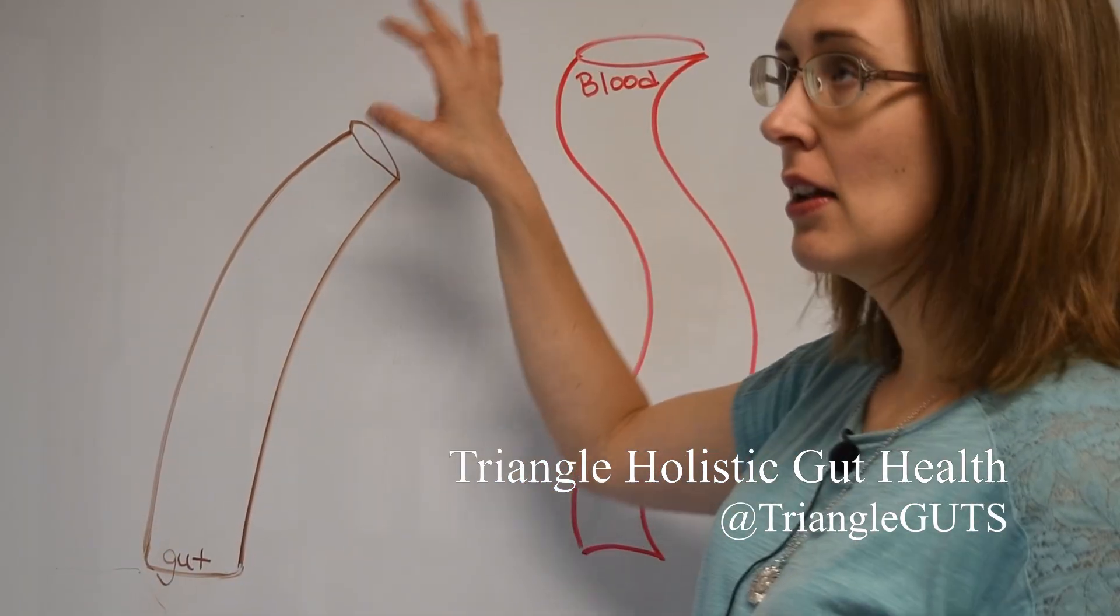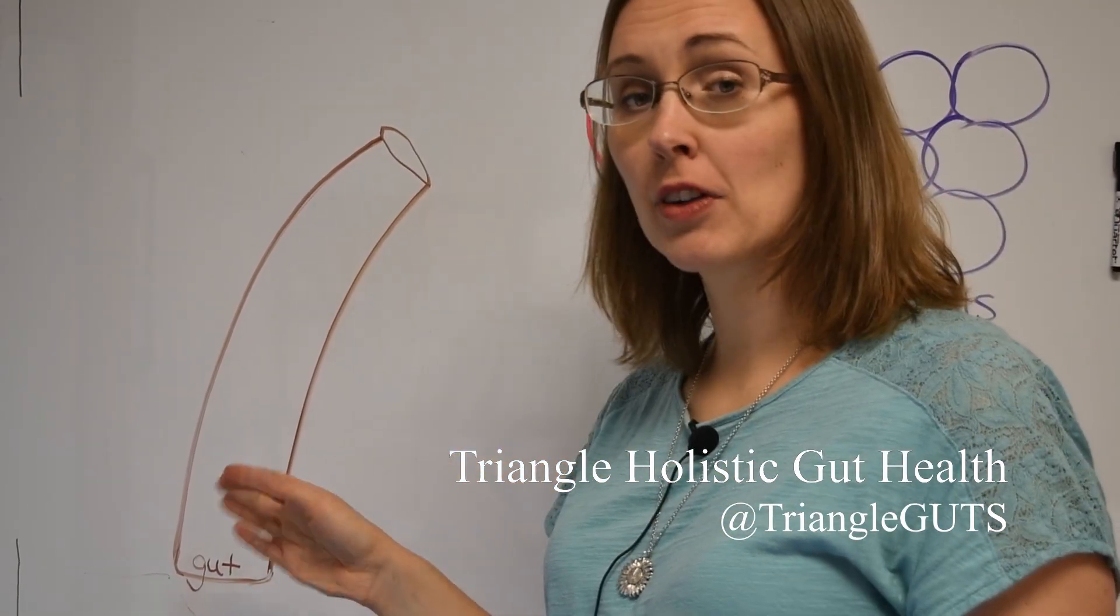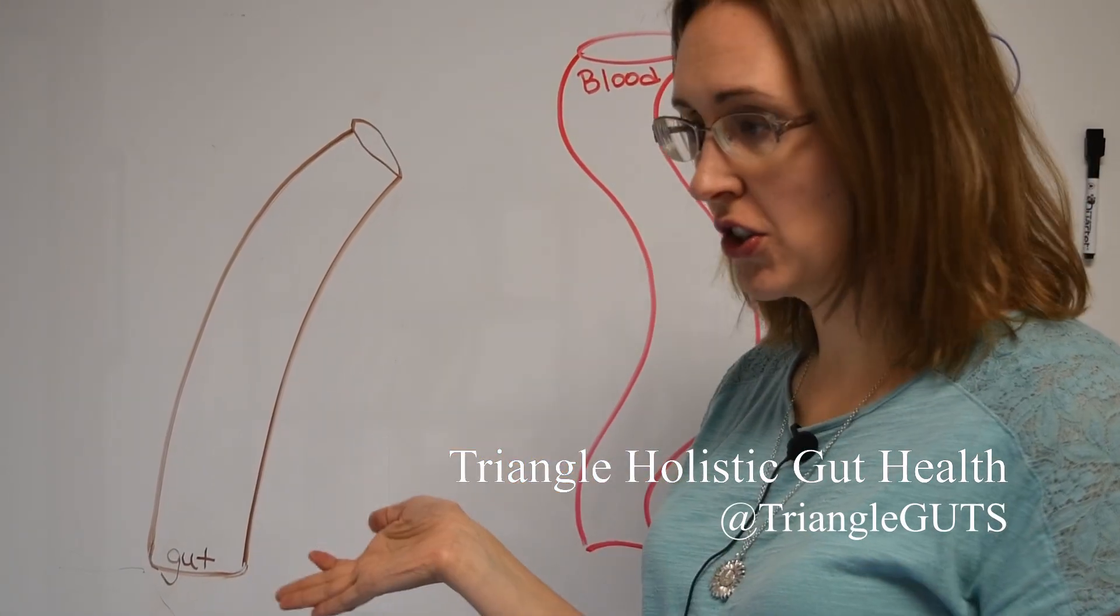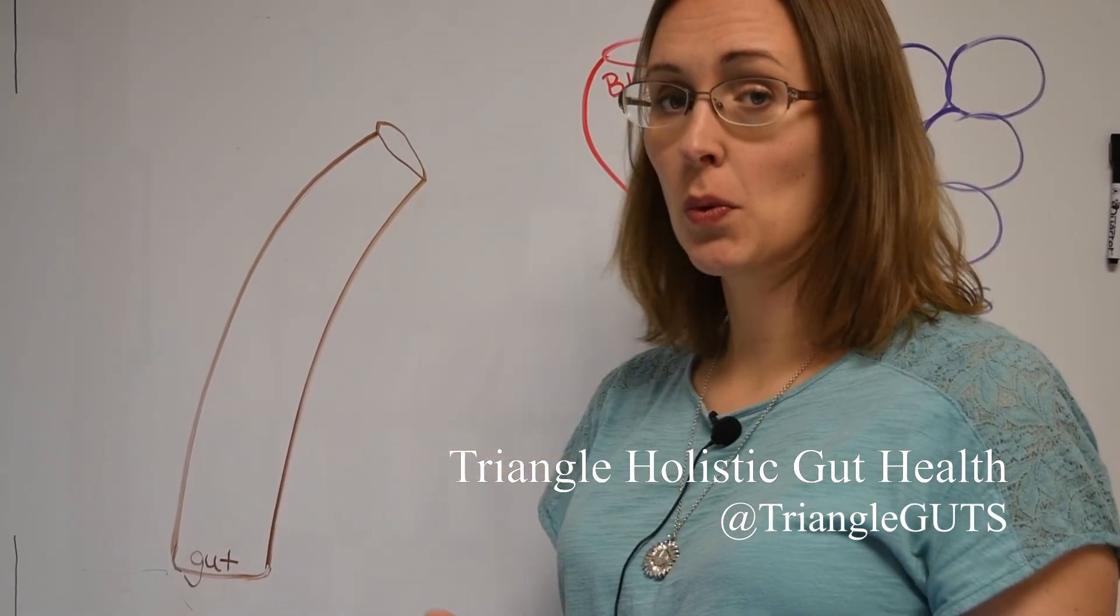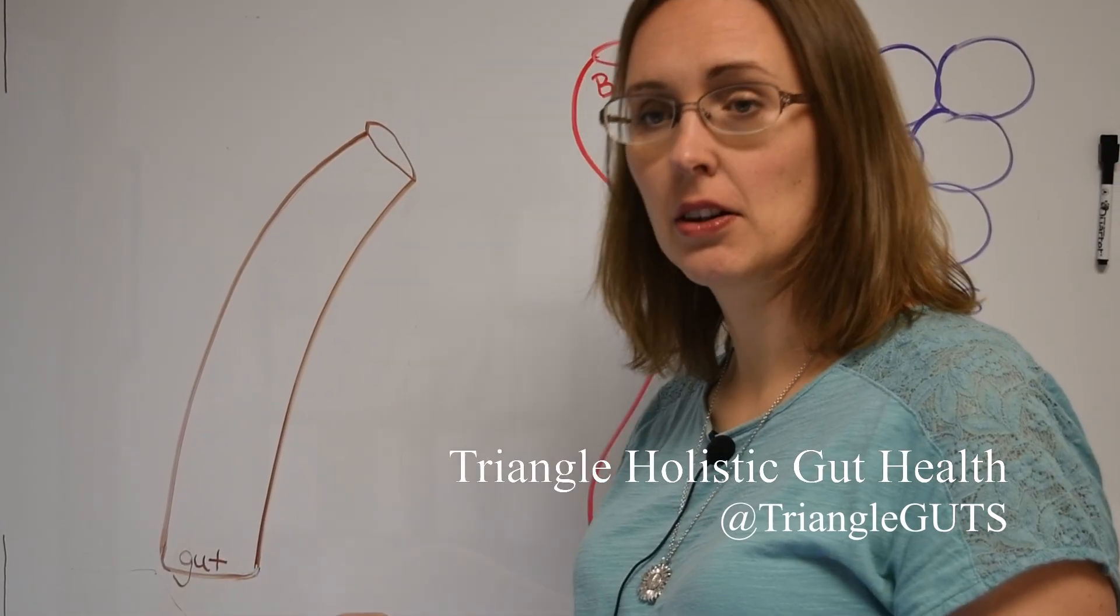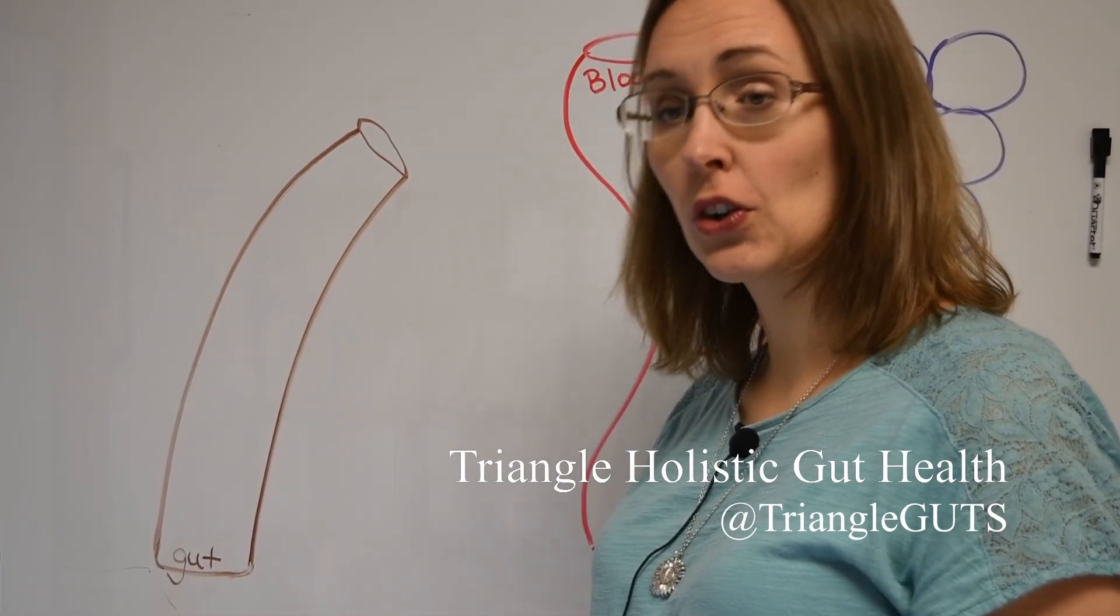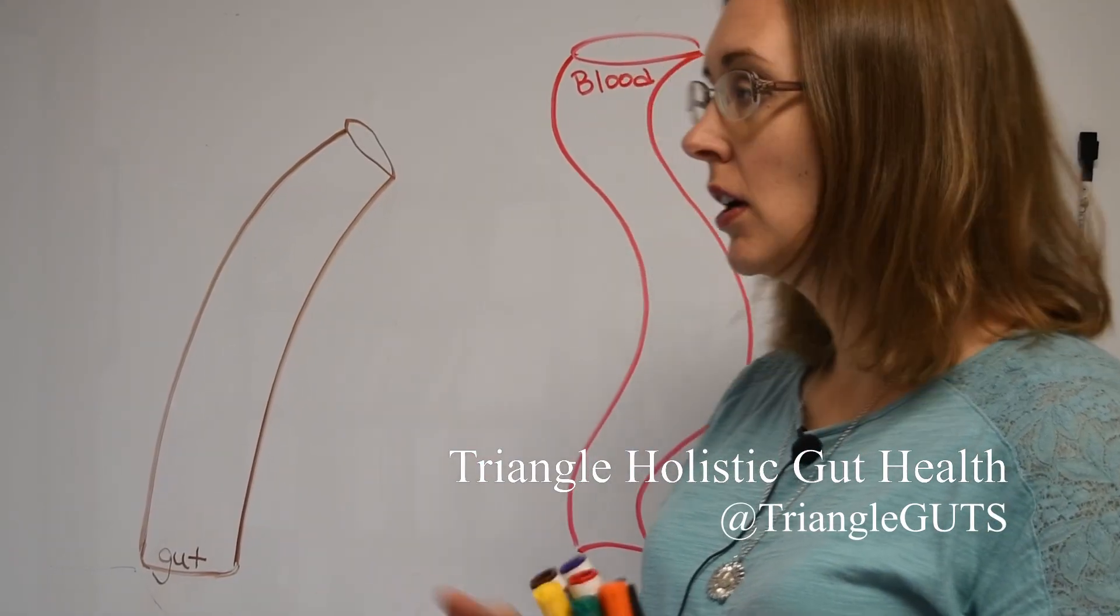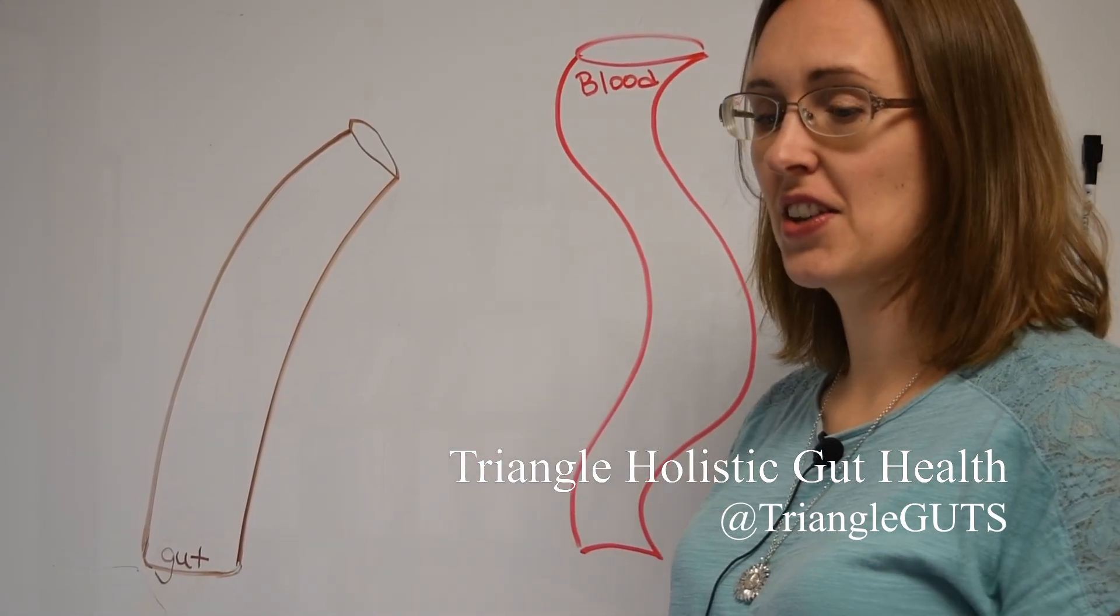As an example, we have the gut tube. Theoretically this could be anywhere from your mouth all the way to your anus because it's just one big hollow connected tube. For those of you with SIBO we're obviously thinking more small intestine. For people with candida overgrowth or other types of dysbiosis we're thinking more colon.